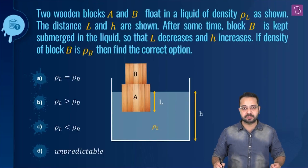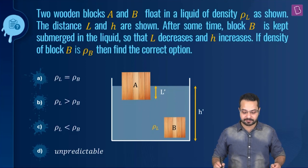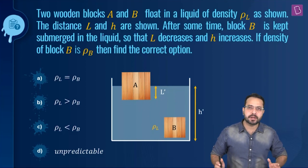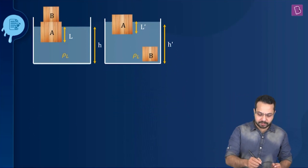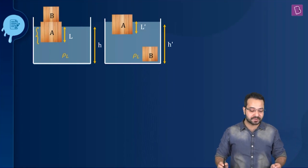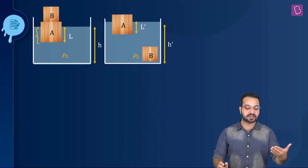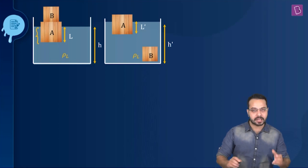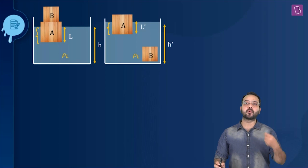Two blocks A and B float in a liquid of density ρL as shown. The distances L and H are indicated. After some time block B is kept submerged in the liquid so that L decreases and H increases. We need to find the relationship between the density of the liquid ρL and the density of block B, ρB. When both blocks are floating, the displaced liquid supports the weight of both blocks A and B.